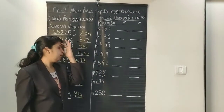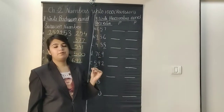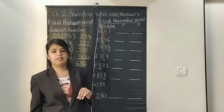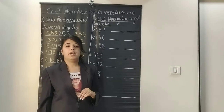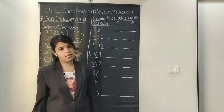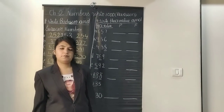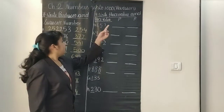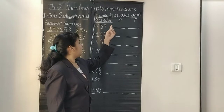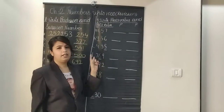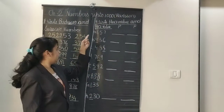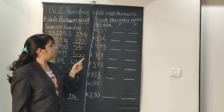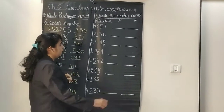Now moving forward, we will do the place value and face value. Place value tells us the position of a digit — whether it is in the hundreds, tens, or ones place. Face value means the same digit itself. Write the place value and face value of the underlined digit — for that underlined digit we have to write the answer.